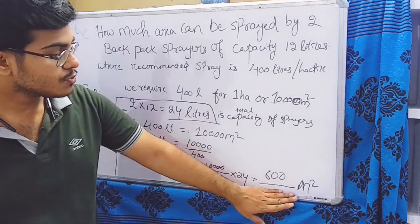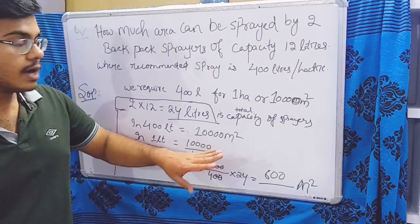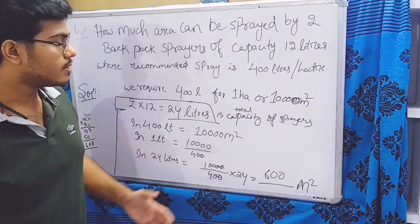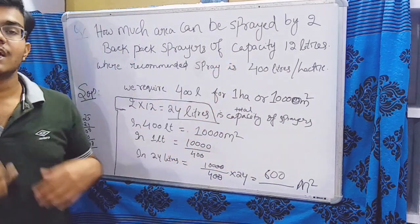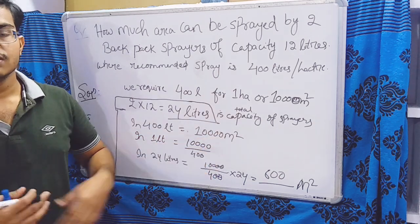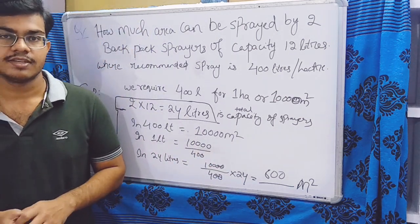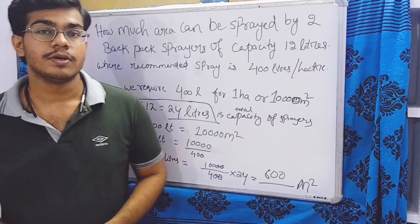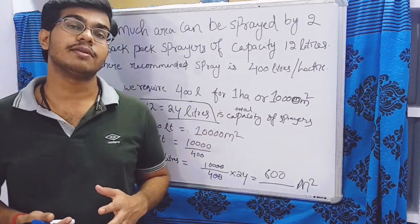Now that we know we can spray 600 square meters at once with these two tanks, we can further calculate how many times we need to refill the two backpacks to spray a full 10,000 square meters. This is how we apply these calculations in agriculture fields to efficiently spray weedicides. The method is based on the unitary approach.